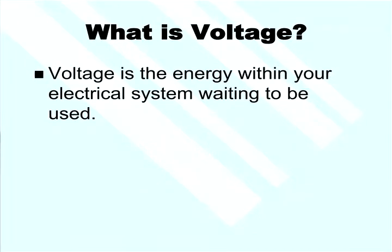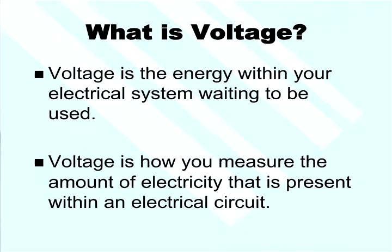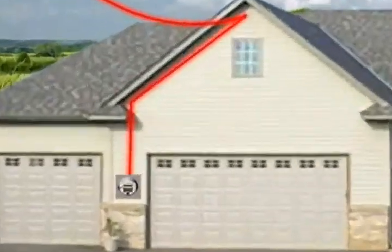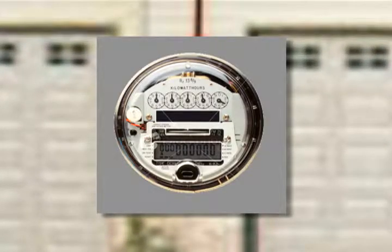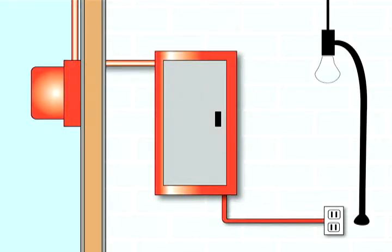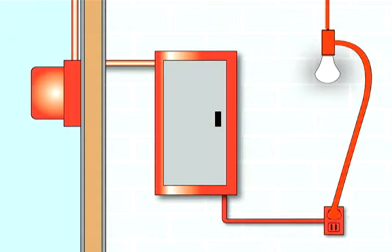Voltage is the energy within your electrical system waiting to be used. It's how you measure the amount of electricity that is present within an electrical circuit. The utility sends electrical energy or voltage to your home, it then goes through a meter — that's how the utility company measures the amount of electricity you're using — and then it enters into your main panel. Voltage, energy, or potential all mean the same thing: it is waiting to be used through the wiring in your home and connects to the plugs and all the different areas in your home.